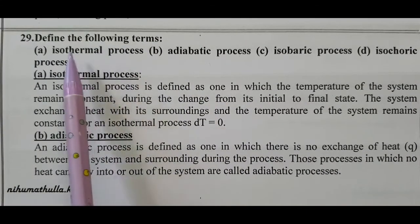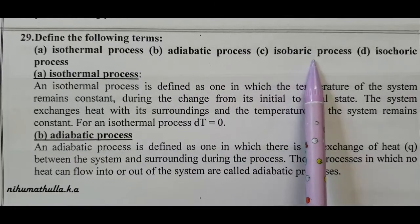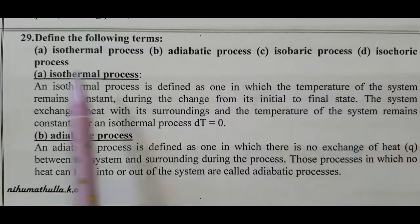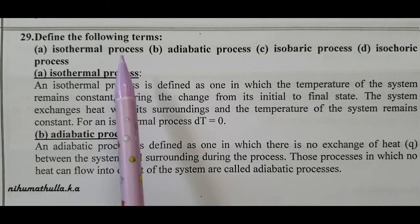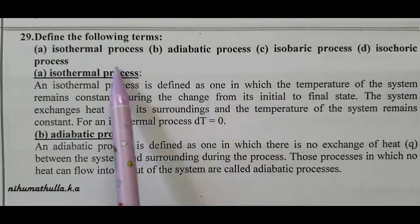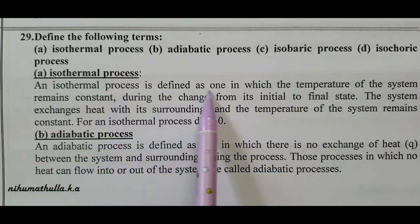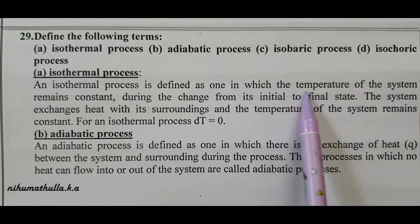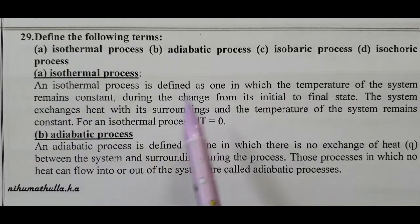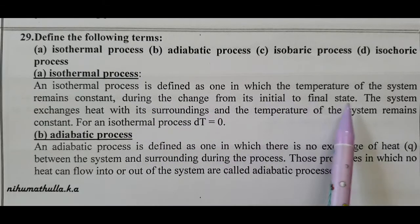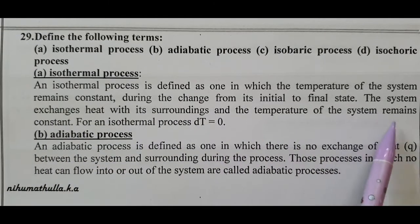Question number 29: Define the following terms. Isothermal process: temperature is constant. An isothermal process is defined as one in which the temperature of the system remains constant during the change from its initial to final state. The system exchanges heat with its surroundings and the temperature remains constant. For an isothermal process, delta T (change in temperature) equals zero.